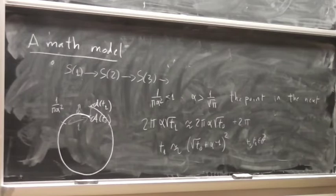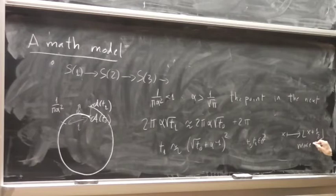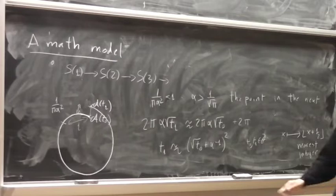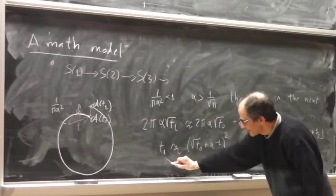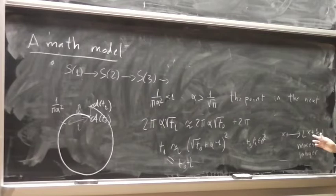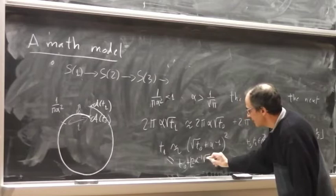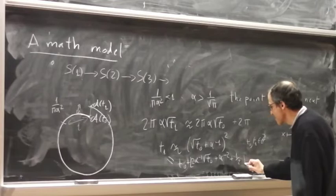We know that to compute the nearest integer we apply a floor formula. Instead of an approximation symbol, if we want an exact formula we put the integer part. Expanding the square and applying the integer part, we get something like 2 alpha minus one times the square root of T0. So the mathematical model is a recurrence formula.